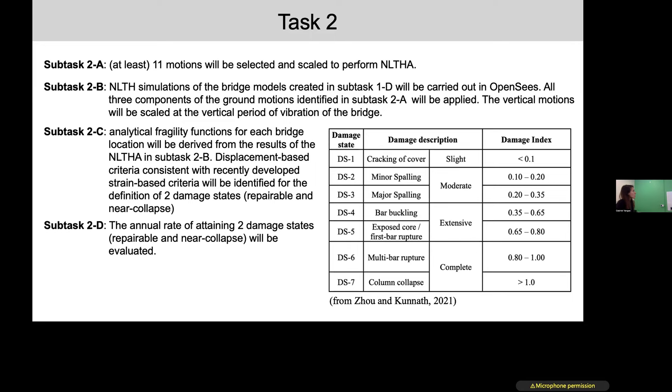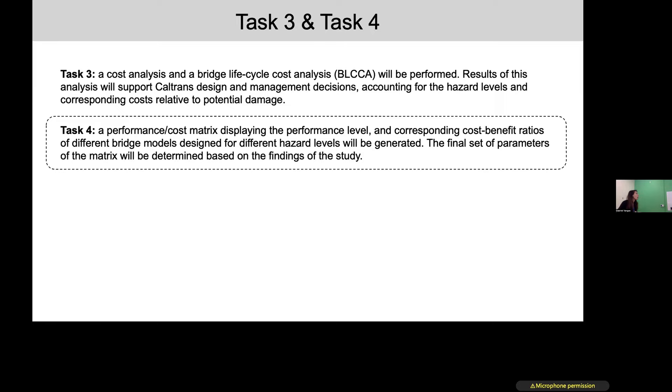Finally in Task number three, we are going to perform a cost analysis and a bridge life cycle cost analysis based on all the results collected in the previous tasks. The overall idea is to provide, not only for each design solution the probability of attaining a specific limit state or damage state, but also what is the cost associated to the attainment of that damage state. So really to provide a comprehensive, as much as possible, probabilistic-based and hazard-based evaluation of the potential damage and potential costs.